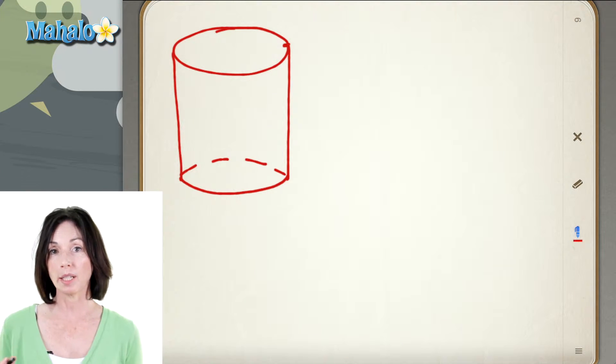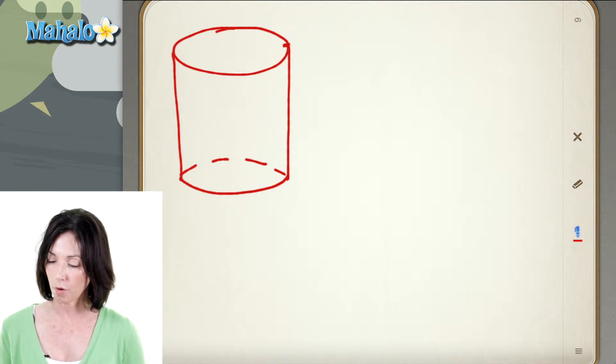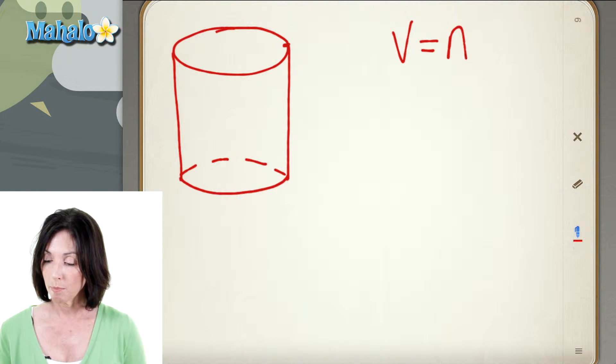A cylinder is a three-dimensional object, and it has a pretty standard volume formula. The volume is equal to the area of the base multiplied by the height.